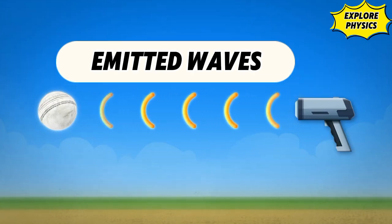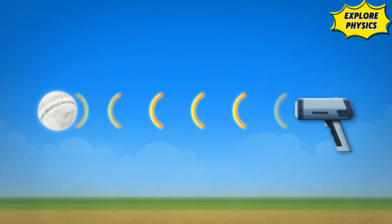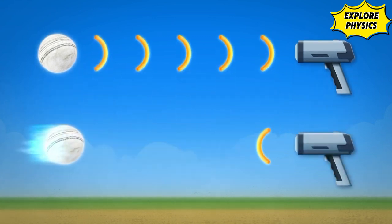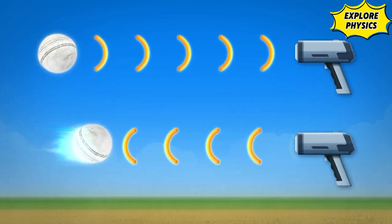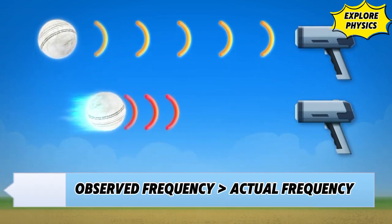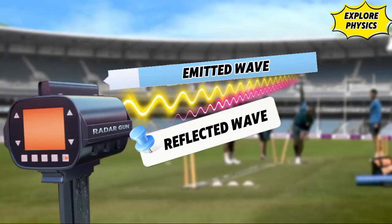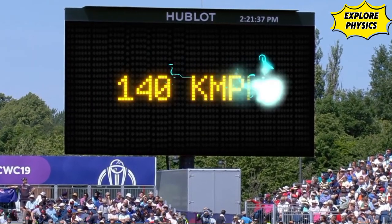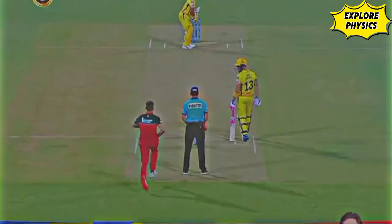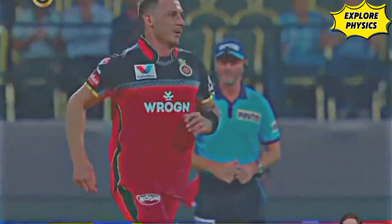When these waves are incident on a stationary ball, the waves reflect back with no change in frequency. But when the ball is traveling towards the radar gun, the frequency of the reflected wave is greater than the emitted wave. This change in frequency between the emitted and reflected wave is detected by the radar gun to calculate the live ball speed.